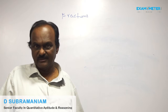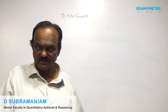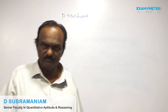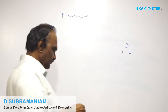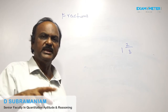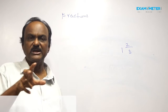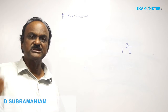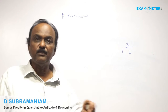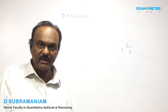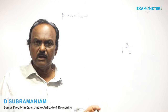An improper fraction is made up of a whole number and a proper fraction. When an improper fraction is changed to consist of a whole number and a proper fraction, then it is called a mixed number.